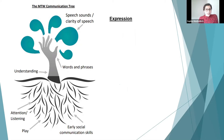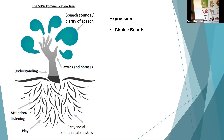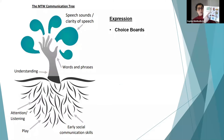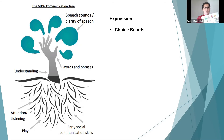Moving on to expression of language: we have choice boards. I have one here for a puzzle activity — it has 'I want,' 'more,' and 'finished' on it. This would be for a child or adult who points to symbols to tell us what they want. I'd use it within a set activity, and also at snack time with whatever choices are available, so they can point to what they want.